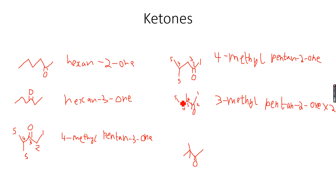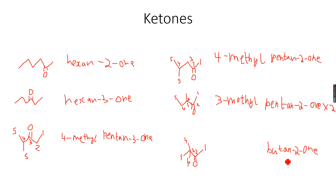I have replaced the methyl group here. When I number the chain — one, two, three, four — I get four carbon atoms in the main chain, so this will become butane-2-one, because there is a ketone group on the second carbon atom. Then we have 4,4-dimethyl, because on the fourth carbon atom there are two methyl groups.